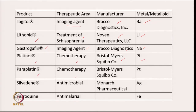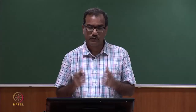Paraplatin, used in chemotherapy from Bristol-Myers Squibb, also has platinum analyzed. Silvadene has antimicrobial properties and is from Monarch Pharmaceuticals, where silver analysis is done. Ferroquine has antimicrobial properties and involves iron analysis. So there are many pharmaceutical products where analysis of different metals is done.